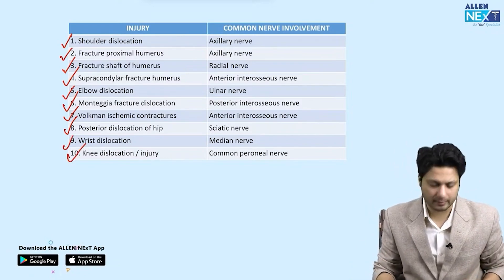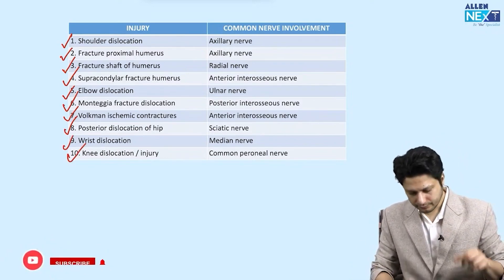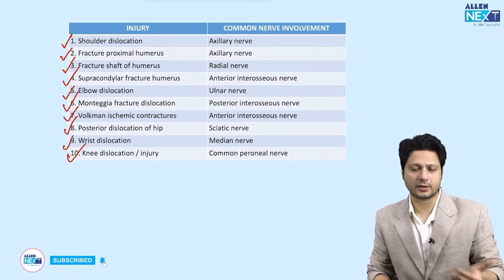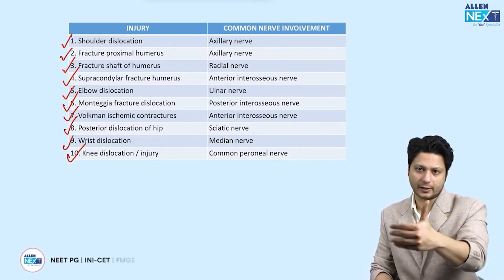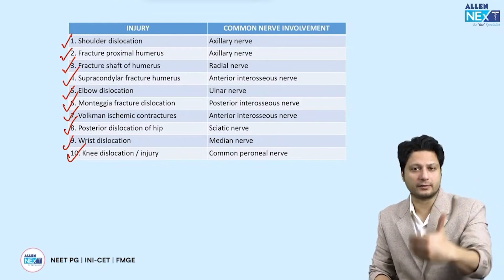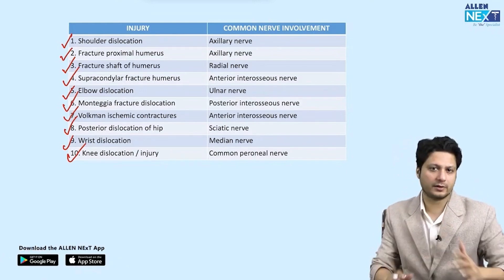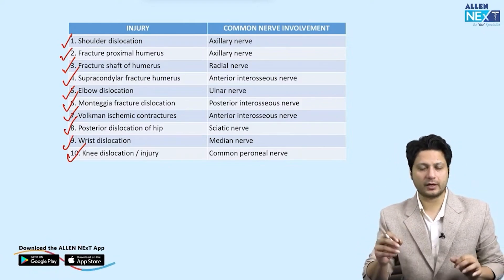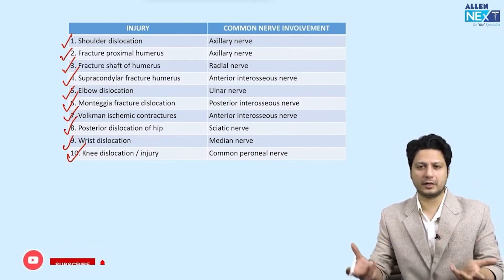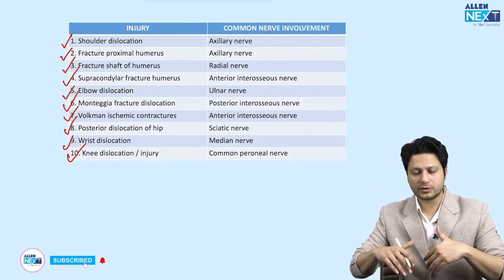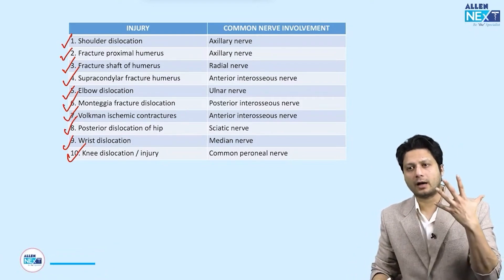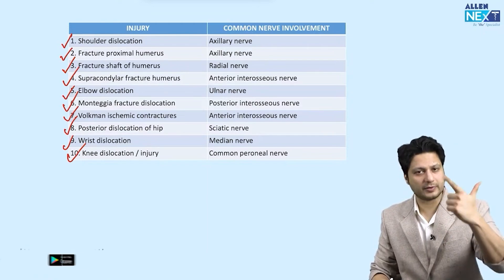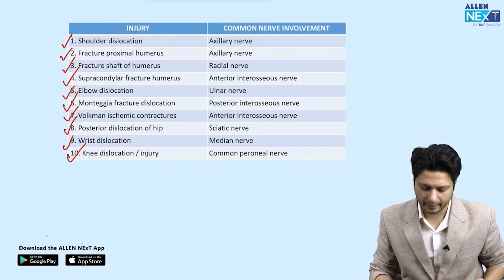Continuing: wrist dislocation → median nerve; knee dislocation or knee injury → common peroneal nerve. X-rays are given and you must name the nerve likely to be injured. Every time you go through previous year questions, a question from this table will always appear.